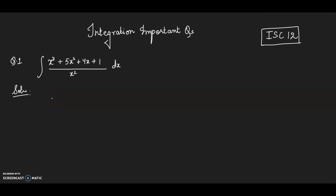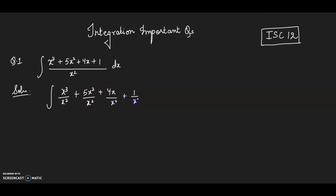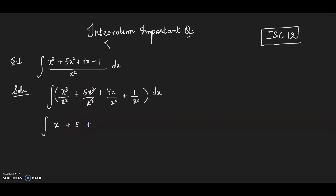In this question you have to separate all these elements in the numerator: x³ divided by x², plus 5x² divided by x², plus 4x divided by x², plus 1 divided by x², and dx. So you can separately integrate all these elements.